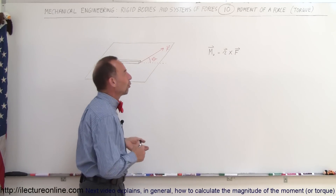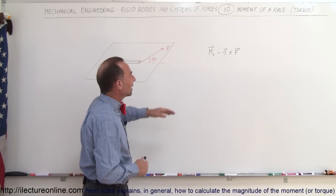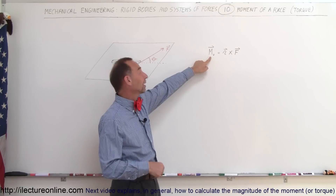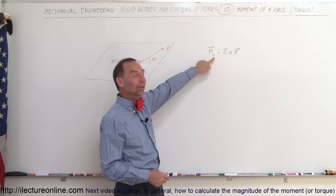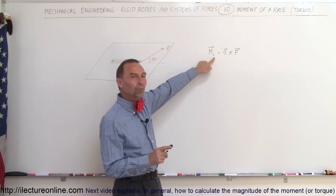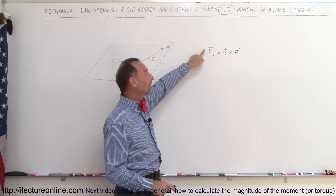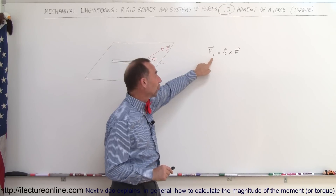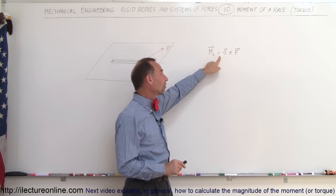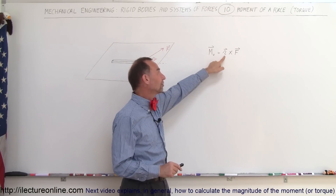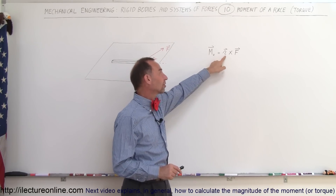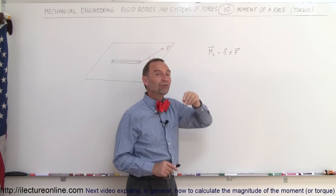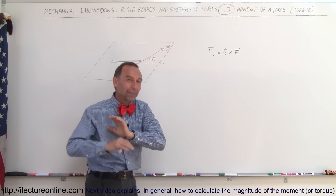So what is the moment of a force? Here's the symbol that we use: the letter M, sometimes with a subscript, and it is indeed a vector. It turns out the moment of a force is the cross product of the position vector multiplied by the force acting on the object.